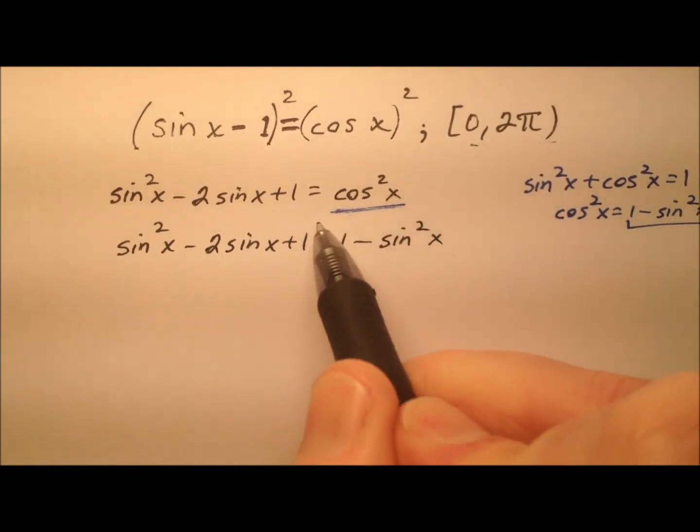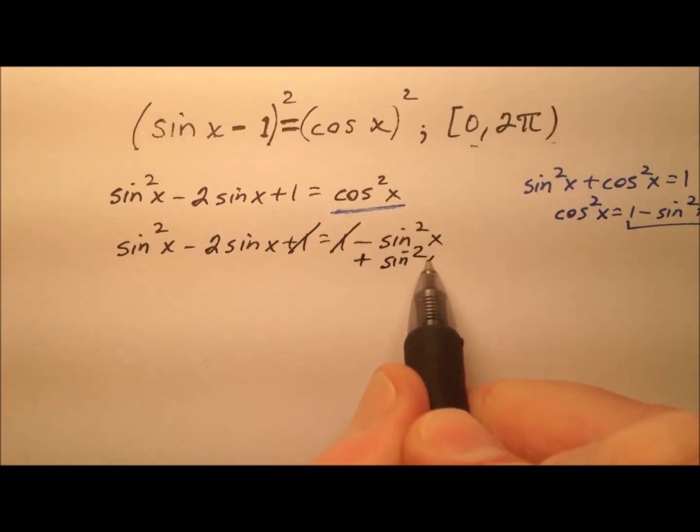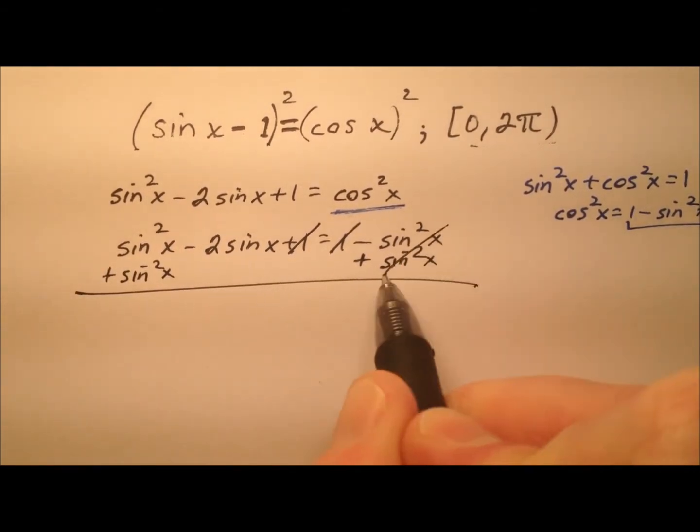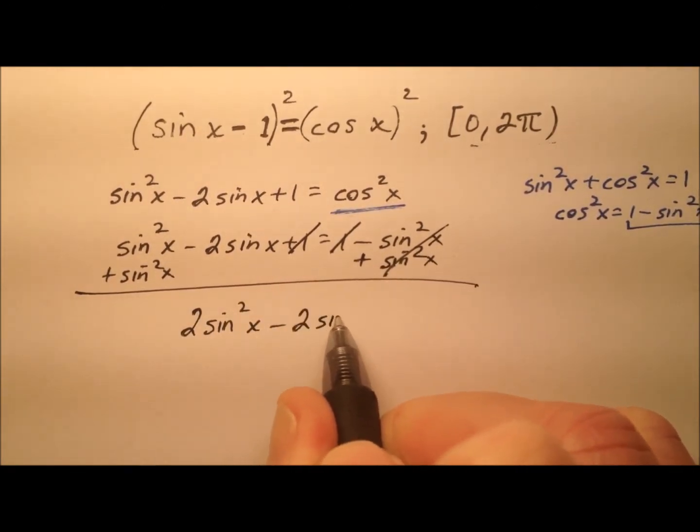It looks like these ones will cancel, that's nice. And then when we add sine squared x to both sides, it looks like we're going to have 2 sine squared x minus 2 sine x equals 0.